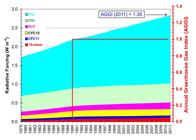Since about 1750, human activity has increased the concentration of carbon dioxide and other greenhouse gases. Measured atmospheric concentrations of carbon dioxide are currently 100 ppm higher than pre-industrial levels. Natural sources of carbon dioxide are more than 20 times greater than sources due to human activity, but over periods longer than a few years natural sources are closely balanced by natural sinks, mainly photosynthesis of carbon compounds by plants and marine plankton. As a result, the atmospheric mole fraction of carbon dioxide remained between 260 and 280 ppm for the 10,000 years between the end of the last glacial maximum and the start of the industrial era.